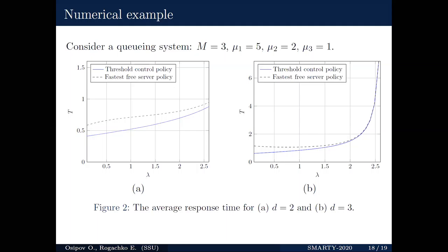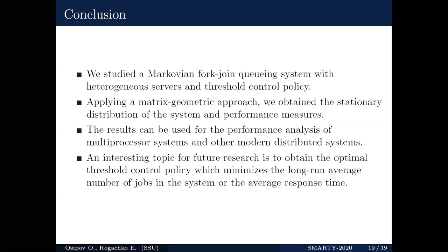To summarize some results: we studied a Markovian fork-join queuing system with heterogeneous servers and threshold control policy. Applying a matrix-geometric approach, we obtained the stationary distribution and other performance measures. The results can be used for the performance analysis of multiprocessor systems and other modern distributed systems. An interesting topic for future research is to obtain the optimal threshold control policy which minimizes, for example, the long-run average number of jobs in the system or the average response time. Thank you for your attention.